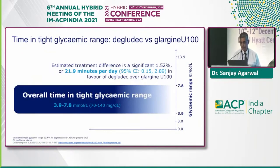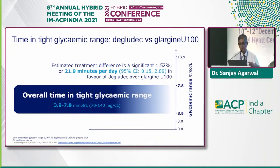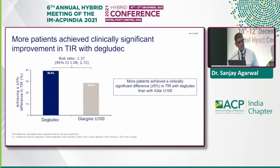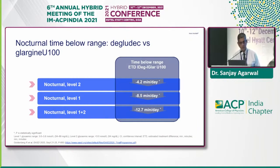Results from the Switch PRO RCT showed that Time in Range with degludec versus glargine U100 had an estimated TIR treatment difference of approximately 1.43%, meaning patients spent almost 20 minutes more per day in Time in Range on degludec. For tight glycemic range (70–140 mg/dL), patients were approximately 22 minutes more per day in range on degludec versus U100. Overall, there was almost a 37% improvement in tight TIR with degludec versus glargine, and patients spent less time below range when on degludec compared to U100.